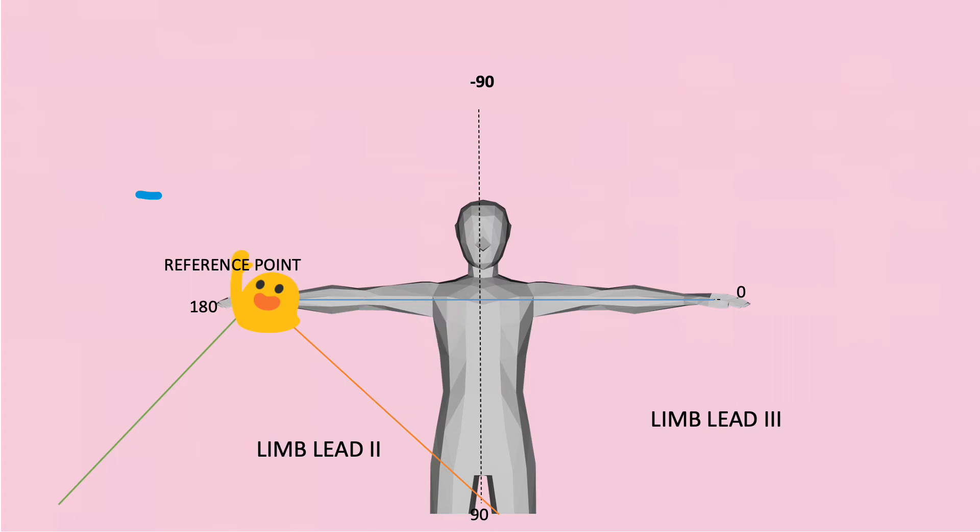So next we move on to the augmented limit. For augmented limit what you need to know is you will first have AVL. Let's just shift the black line to the reference point. You will notice that AVL is above the 0 degree and we define the anti-clockwise rotation as a positive direction. So you are moving in the opposite direction. This will give you negative 30 degrees.